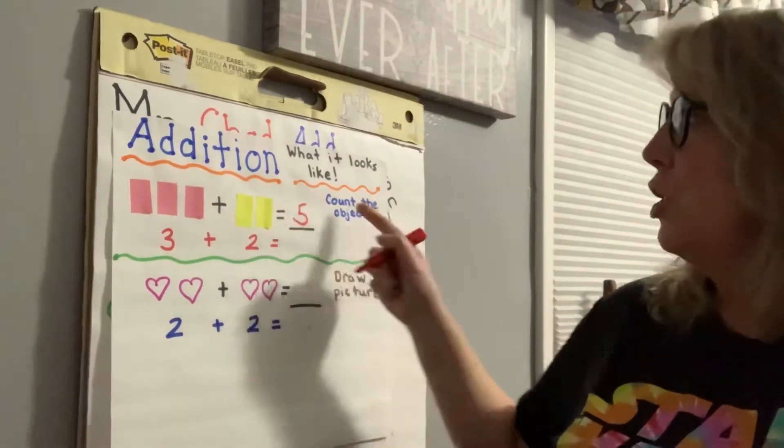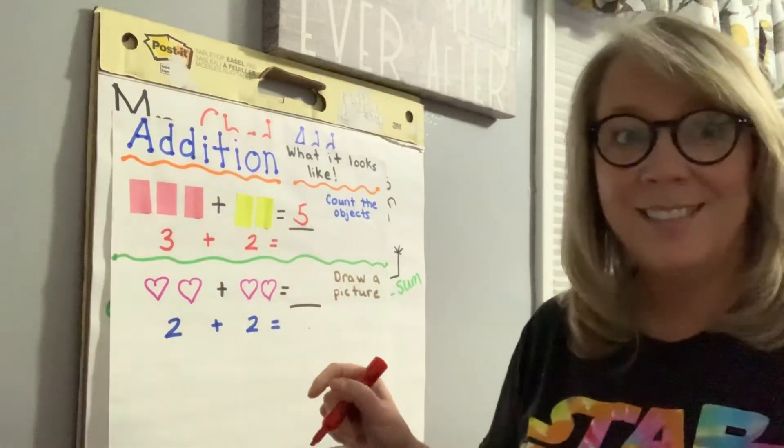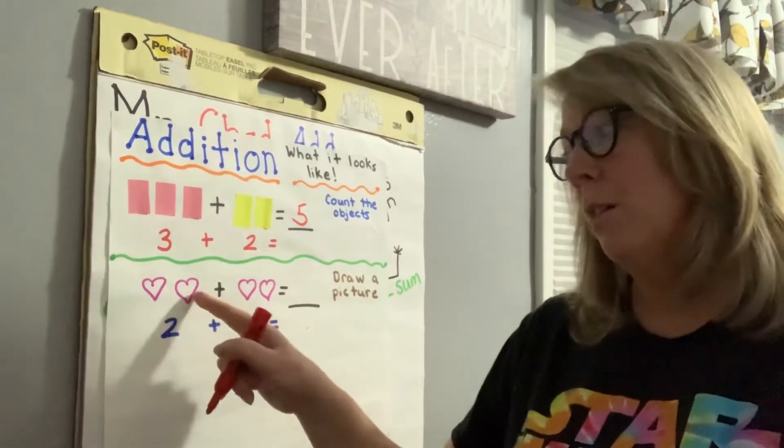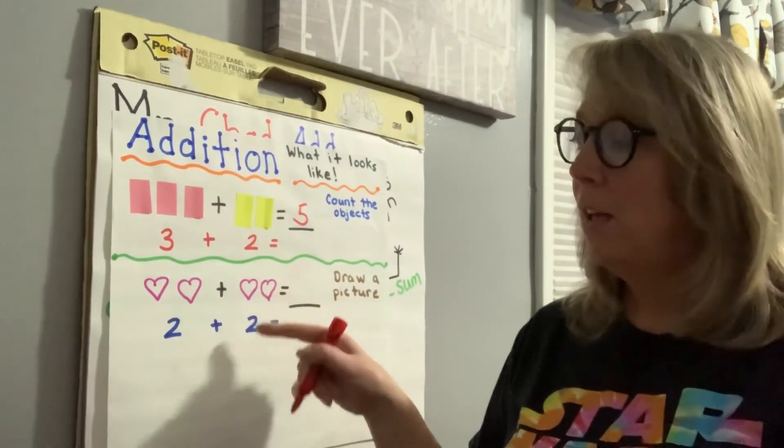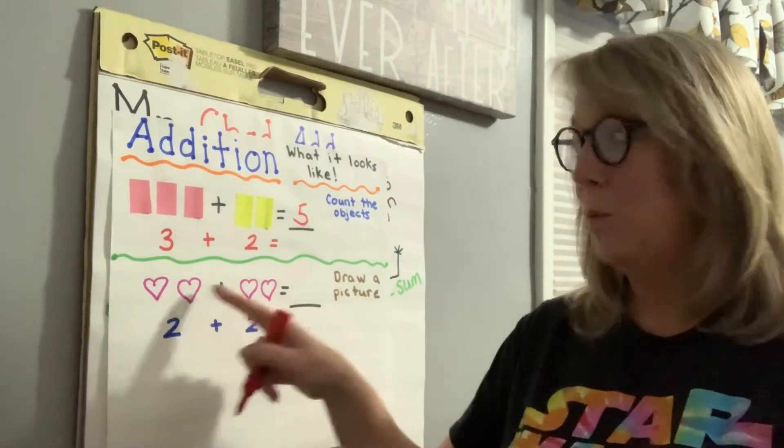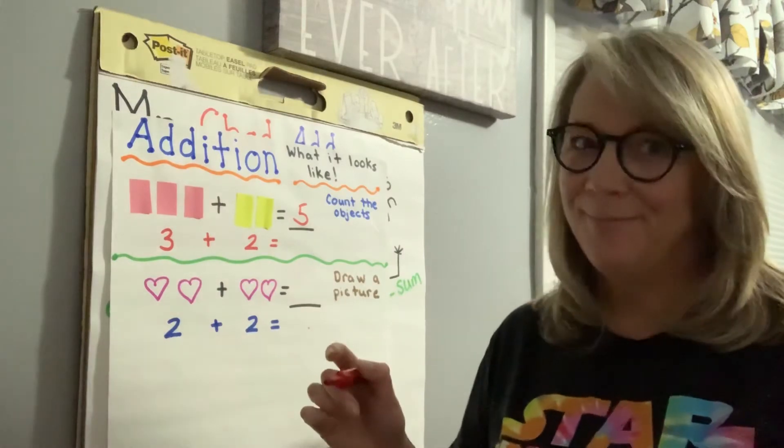So we can count the objects with addition, right? And then down here you can draw pictures. So I have two hearts here, two hearts here, and then I could say two added to two, or two plus two. And what does that equal? You all know that one - four.